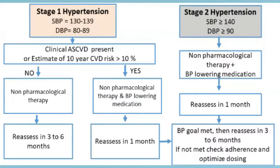In Stage 1 hypertension, you first estimate the atherosclerotic cardiovascular disease risk — the 10-year ASCVD risk using the calculator discussed earlier. If the ASCVD risk is greater than 10%, treat it like Stage 2: start medicines along with lifestyle and diet modifications. If the ASCVD risk is less than 10%, only start diet and lifestyle modifications and reassess every three to six months. Patients on drug therapy should be reassessed every month until the blood pressure goal is met, then revert to three to six monthly follow-up.